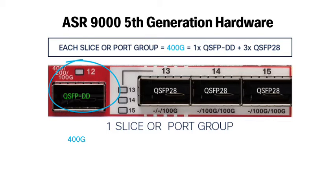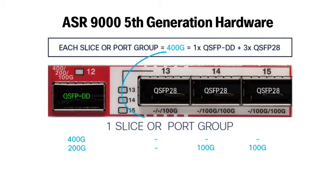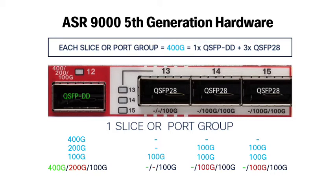You can use the full 400 gig all at once by using a QSFP-DD — in this case port 12 — and ports 13, 14, and 15 are disabled because there's no bandwidth left in the slice. With the QSFP-DD you could also run the port at 200 gig speeds; then there's 200 gig of bandwidth left over in the slice, meaning ports 14 and 15 can each run at 100 gig, using up the remaining 200 gig. Port 13 is disabled when the QSFP-DD port runs at 200 gig, denoted by the dashed line around it. If you run port 12 at 100 gig, there is 300 gig left over, which you can use to run ports 13, 14, and 15 at 100 gig each.